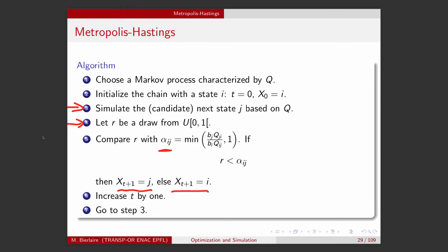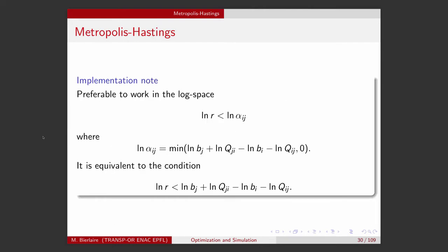As you can see, this is quite easy to implement, but there are some difficulties. The first difficulty is numerical: we'll have to deal with probabilities. Probabilities can be very low numbers, and when you multiply low numbers, it's even lower. So it's usually preferable to work in the log space. Instead of verifying if r is less than alpha i,j, we verify if log of r is less than the log of alpha i,j. And the log of alpha i,j is the minimum of these two terms.